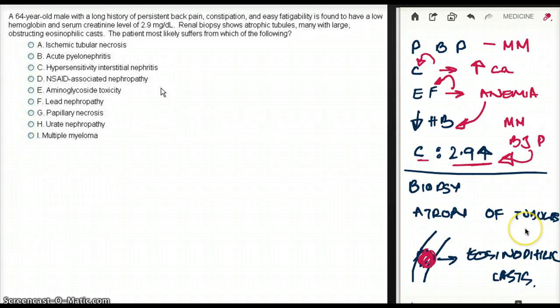And on light microscopy, we're going to see numerous glassy eosinophilic casts on the tubular lumens, which is seen here. So really, this is a constellation of symptoms together, which brings to the fact that this is multiple myeloma.